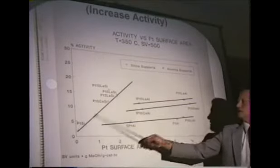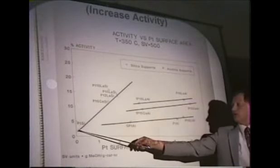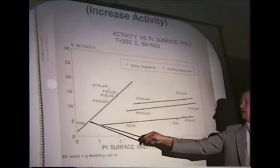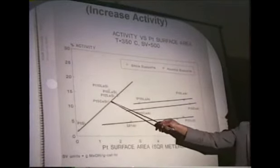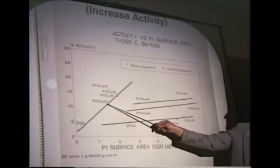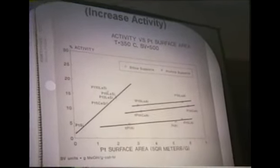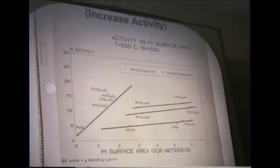On silica, the effect is even more dramatic. We have very low activity on unmodified platinum supported on silica. Doping with lanthanum or cerium improves the dispersion, but also increases the activity to a much higher extent than would be expected from dispersion alone.